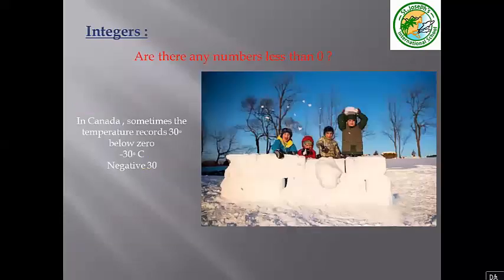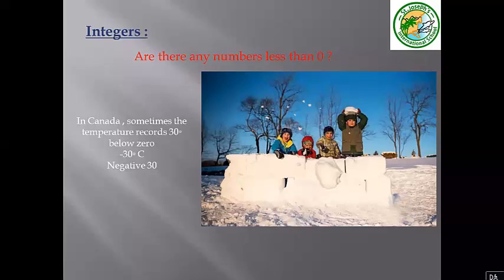Integers. Are there any numbers less than zero? Yes, of course. For example, in Canada, sometimes the temperature is 30 degrees below zero, and we call it negative 30 — not minus 30, but negative 30 degrees. It means that the integers include natural numbers starting from zero, one, two, three, and so on, and also include negative numbers like negative three, negative two, negative one, zero.